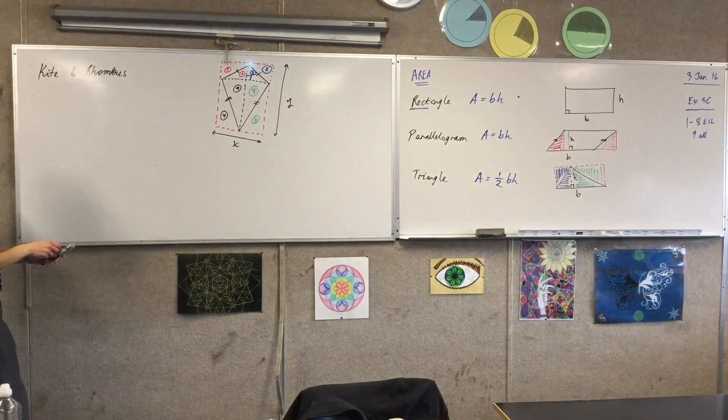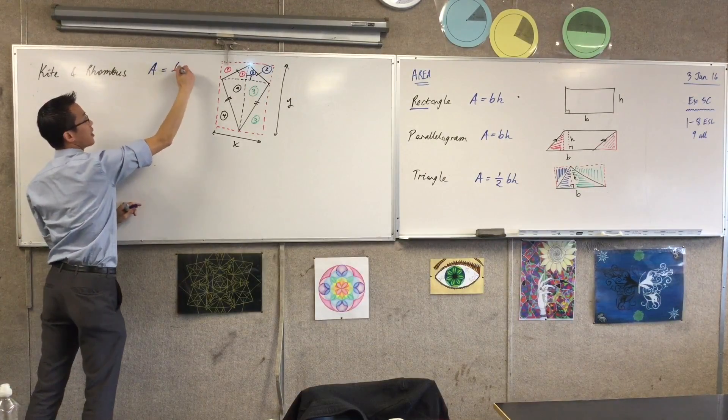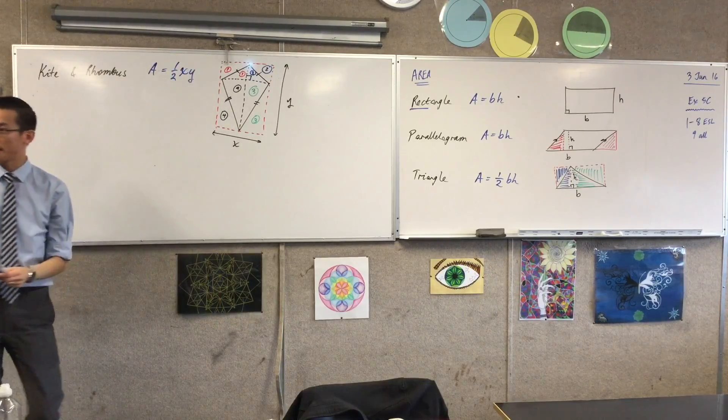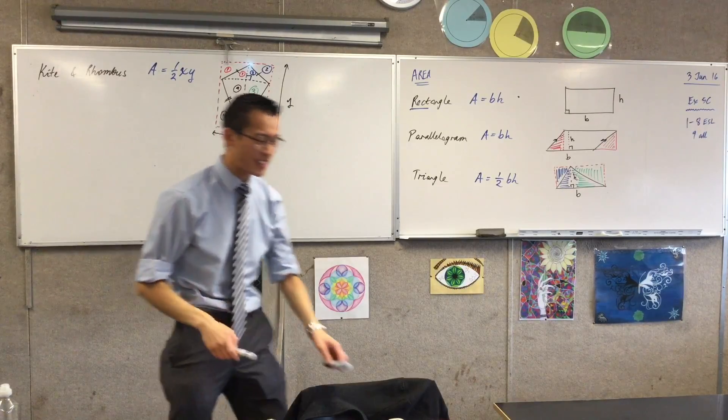So therefore, just like with the triangle, because it's the same argument, you're going to get a half of your big rectangle, which in this case is not the h, it's x, y. Bless you. So it looks a little bit different, but it's not really.